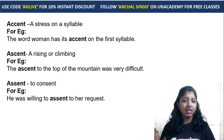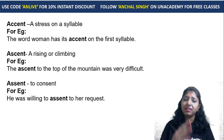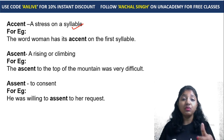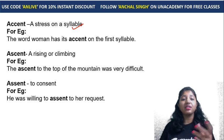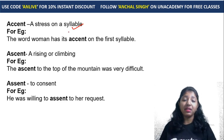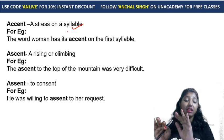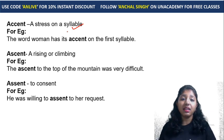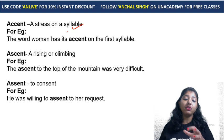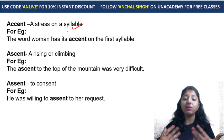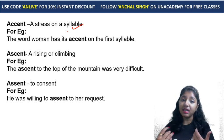Accent, ascent, and assent — these words sound almost the same with spellings slightly different. Accent means stress on a syllable. For example: 'The word woman has its accent on the first syllable.' Ascent means a rising or climbing. For example: 'The ascent to the top of the mountain was very difficult.' Assent means consent — to agree. For example: 'He was willing to assent to her request' — he wanted to give his consent to her request.